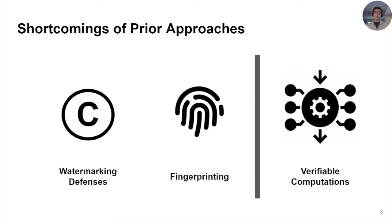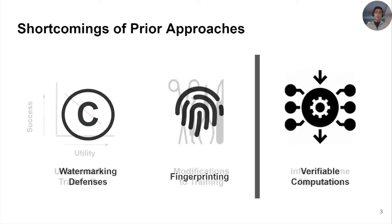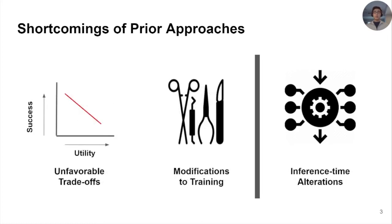There are three related works that address these issues or questions of ownership resolution and Byzantine workers. These are watermarking defenses and fingerprinting for the former, or verifiable computations for the latter. However, both watermarking and fingerprinting lead to unfavorable trade-offs between their success and the model utility, meaning that it can be difficult to employ these solutions while attaining similarly performant models. They also require training time modification, limiting their general applicability.